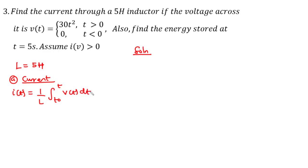Plus i(t₀), where i(t₀) is the initial current in the inductor. In this example we are not given the initial current, so we assume that the initial current i(t₀) is equal to zero.